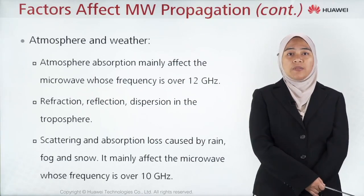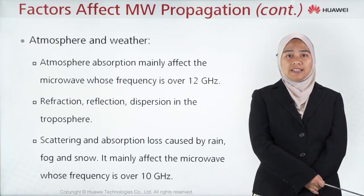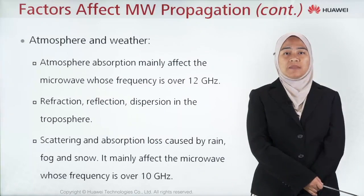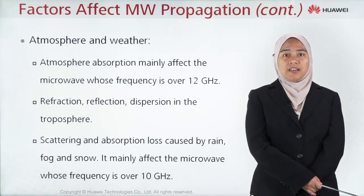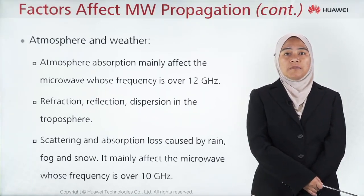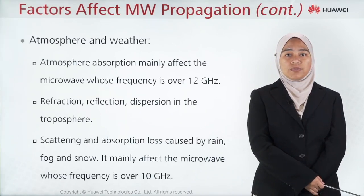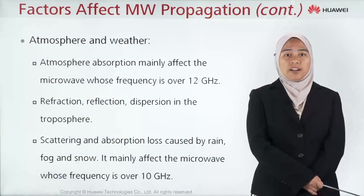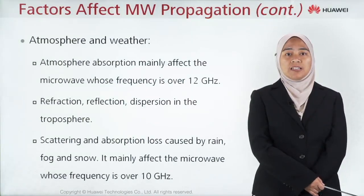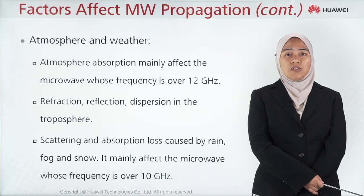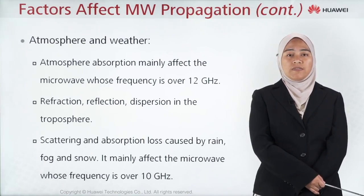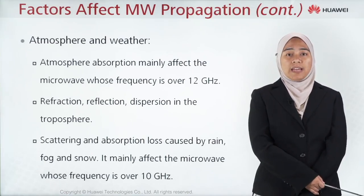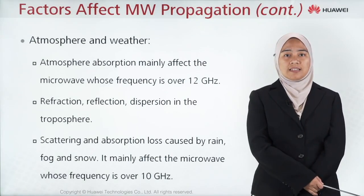The atmosphere and weather are another main factor affecting microwave propagation. Atmosphere absorption mainly affects microwaves whose frequency is over 12 GHz. Refraction, reflection, and dispersion occur in the troposphere. Scattering and absorption loss caused by rain, fog, and snow mainly affect microwaves whose frequency is over 10 GHz.